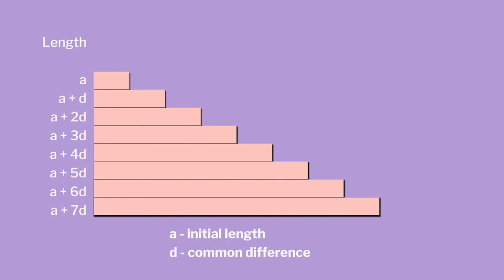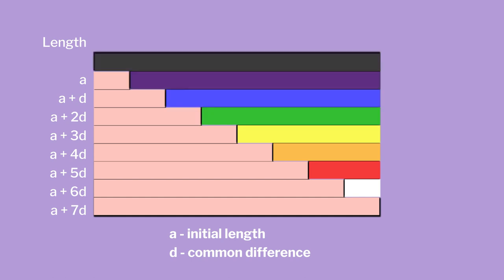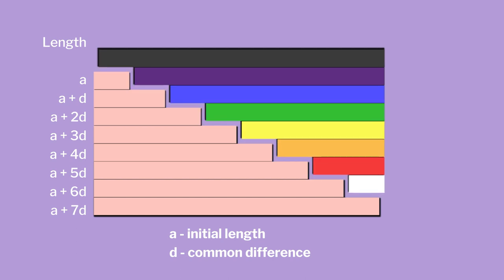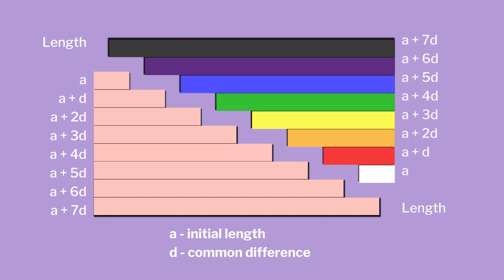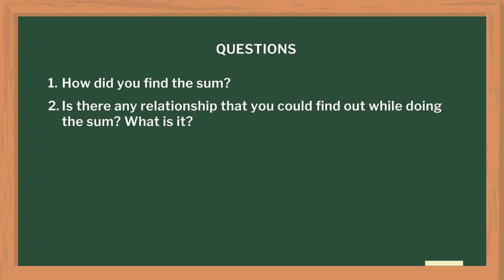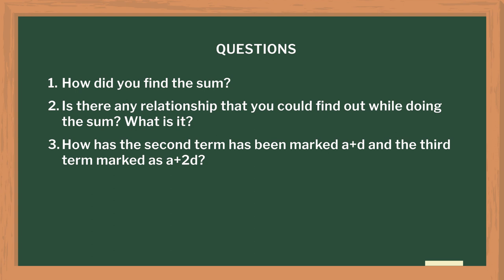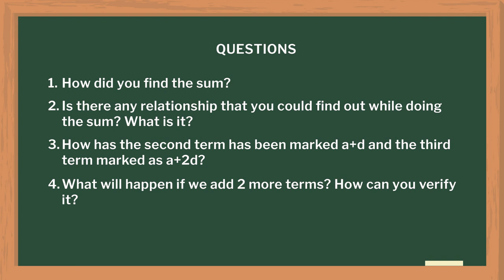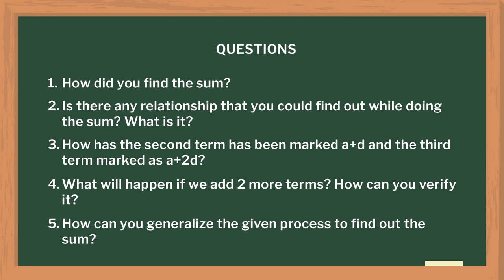Is it possible to make a rectangle from this shape? At this stage, I encourage students to use paper strips of different colors to try and fill the shape to make a rectangle. If you observe carefully, you will realize that the length of the longest strip is now the side of the rectangle, and all the other strips and their counterparts of different colors must have their lengths such that their sums are equal to the length of the side. You can also ask students questions like: How did you find the sum? Is there any relationship you can find while doing the sum? How has the second term been marked as a+d and the third term as a+2d? What will happen if we add 2 more terms? How can you verify it? How can you generalize the given process to find out the sum?